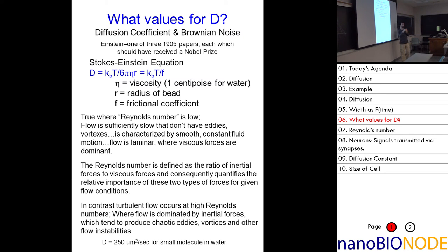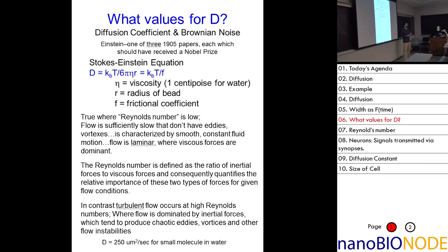Einstein published three articles in the same journal in 1905: one on the nature of the diffusion constant, special relativity, and the photoelectric effect. Each one deserved a Nobel Prize. He never got one for special relativity or the diffusion constant — special relativity was not believed by those who gave out the Nobel Prize at the time.